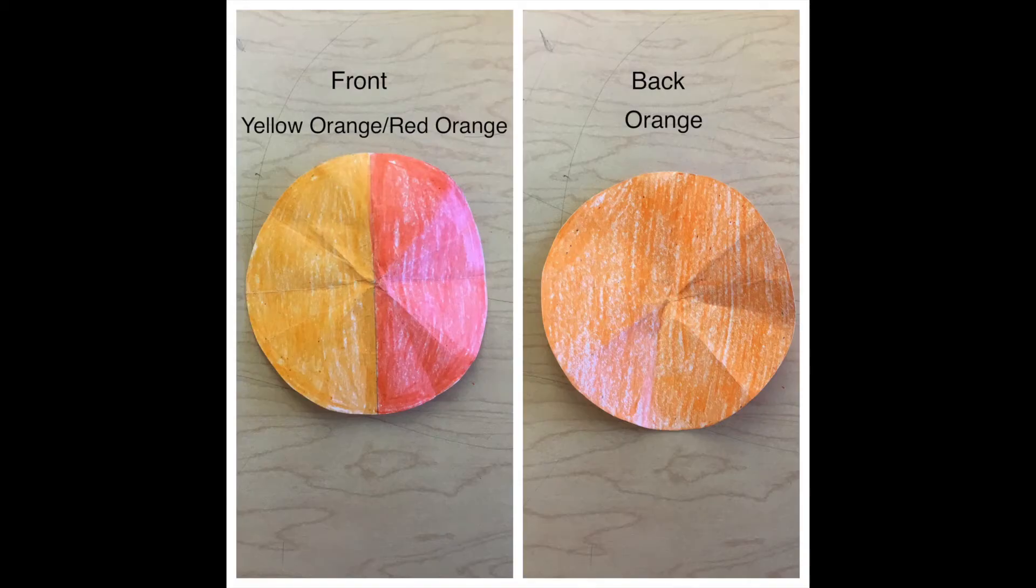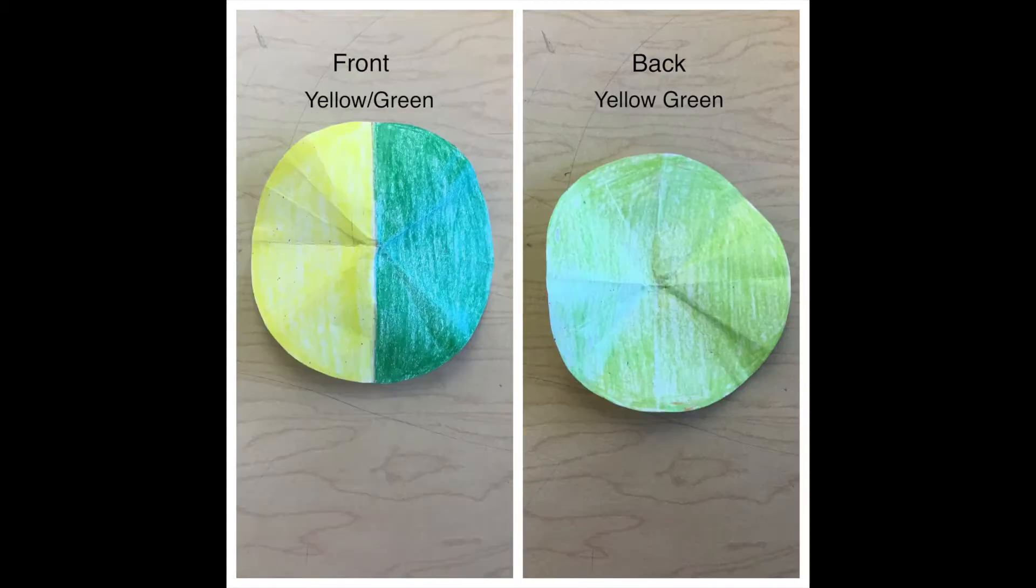One circle will have yellow-orange and red-orange on one side and orange on the other side. Another circle will have yellow and green on one side and yellow-green on the other side.